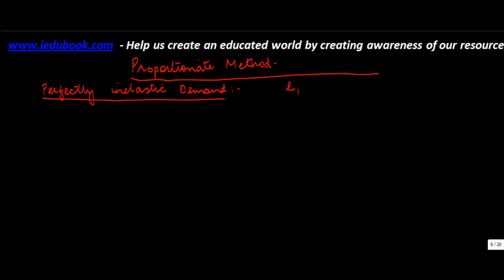Now let's understand the measurement of demand using the proportionate method. We saw earlier that there were five situations which could happen. Let's take the first one, which is that of a perfectly inelastic demand, or Ed is equal to 0, which means that elasticity of demand due to change in prices is zero.